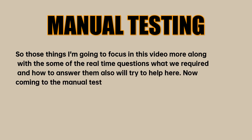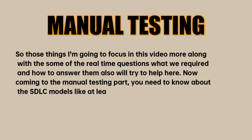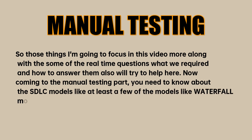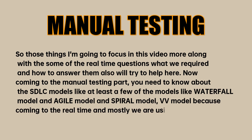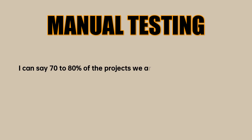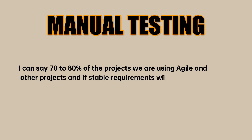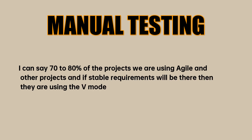Coming to the manual testing part, you need to know about SDLC models — at least a few of them like the waterfall model, agile model, spiral model, and V-model. In real-time, mostly we are using the V model and the agile model. I can say 70 to 80 percent of projects are using agile, and if stable requirements are there then they use the V model.